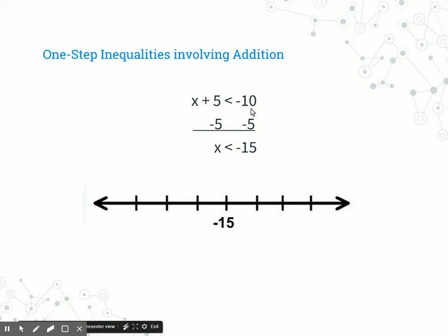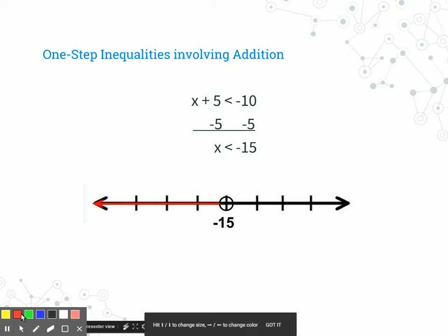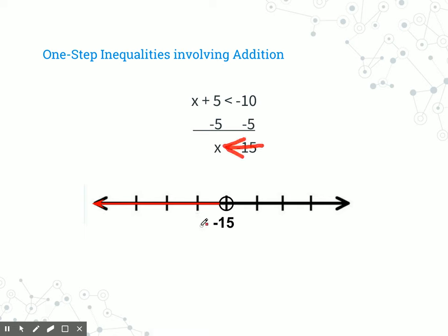Since it has that less than sign — if you remember from our first set of notes this week — that makes it an open dot, because it does not include negative 15. Negative 15 is exactly negative 15, not less than it. All numbers to the left would be the solution, because those are all smaller than negative 15. A helpful trick: look at what direction the inequality arrow is pointing — it's almost like it's making an arrow pointing that way — so when you draw your line, it goes to the left.